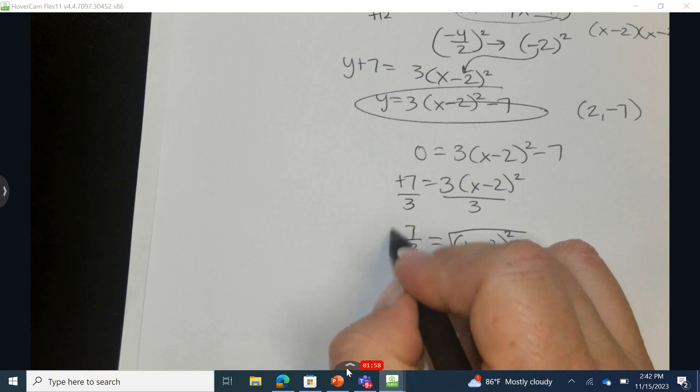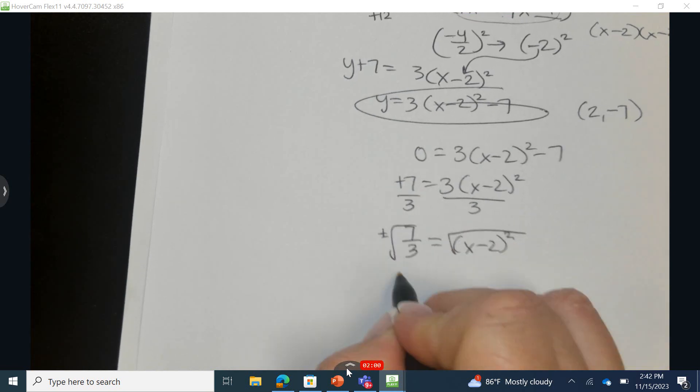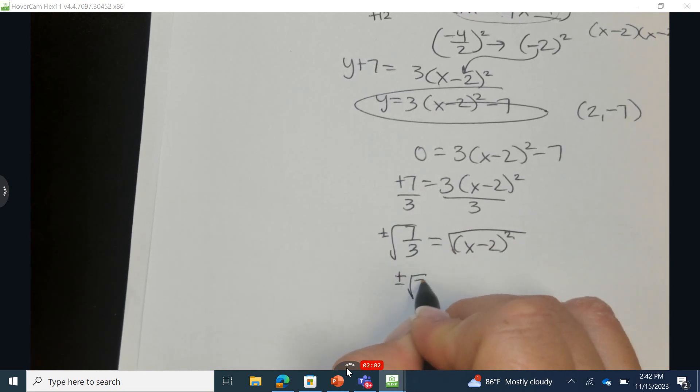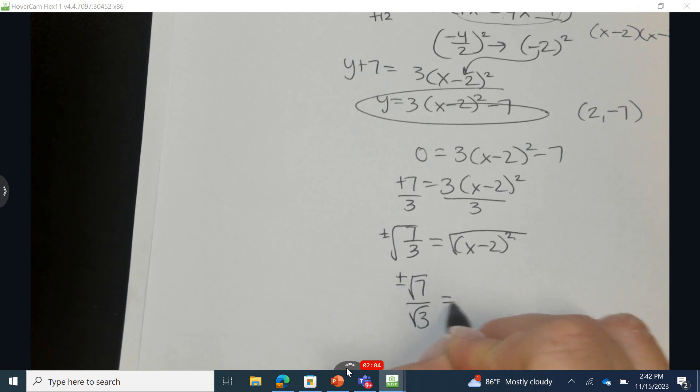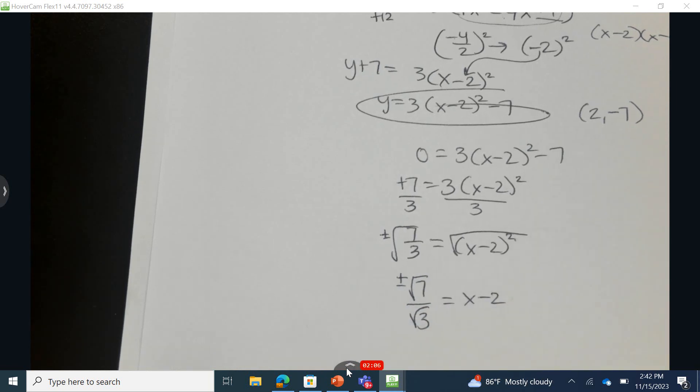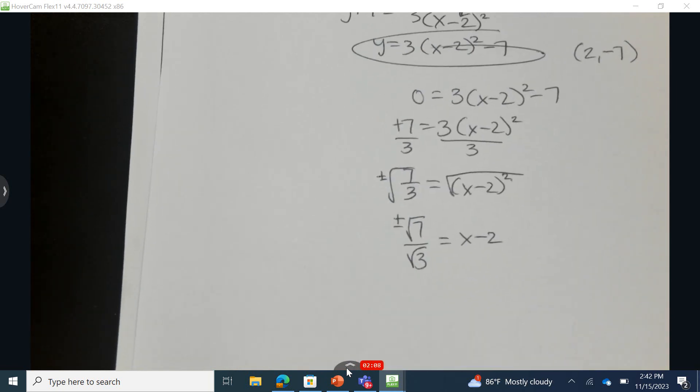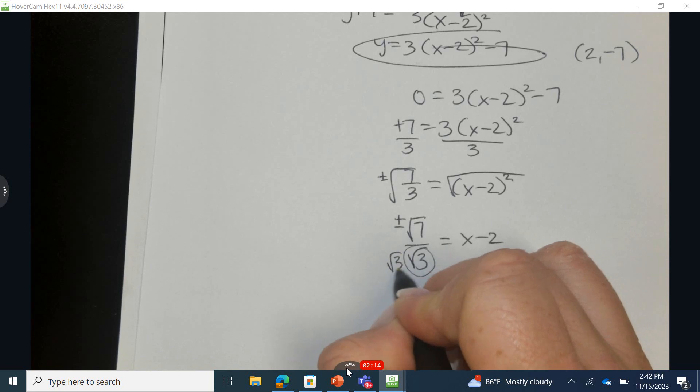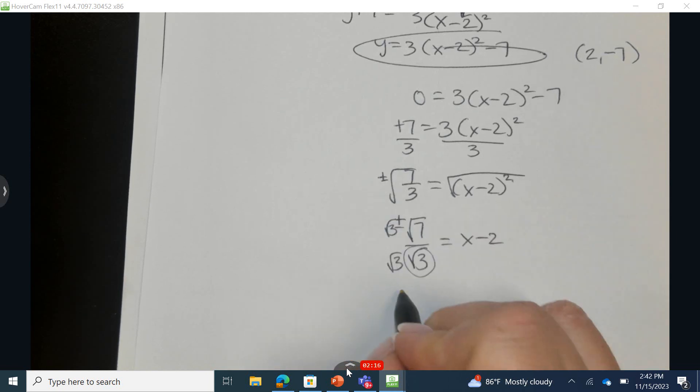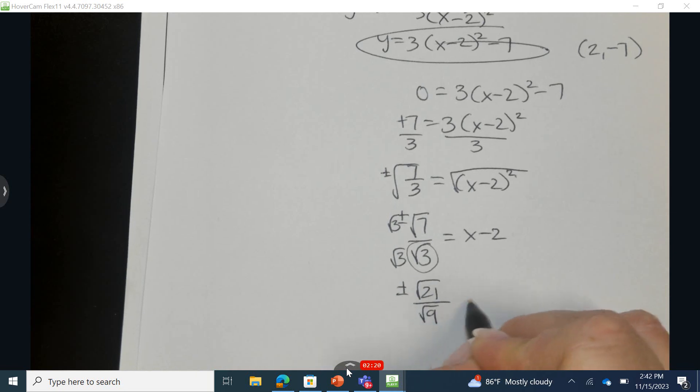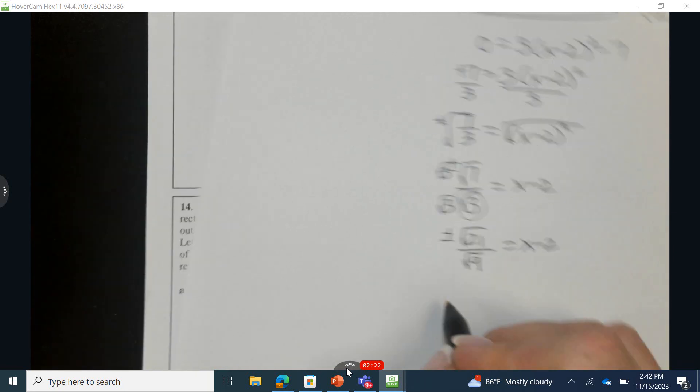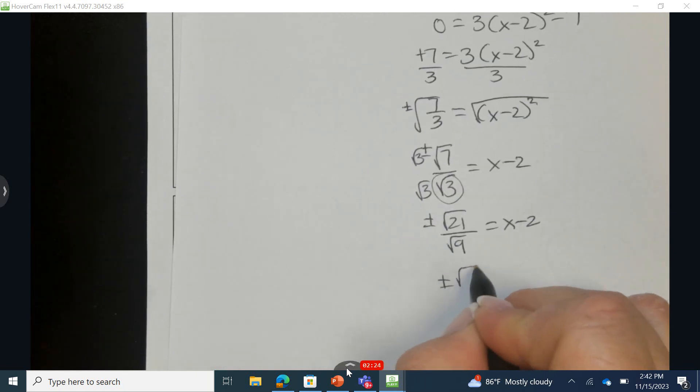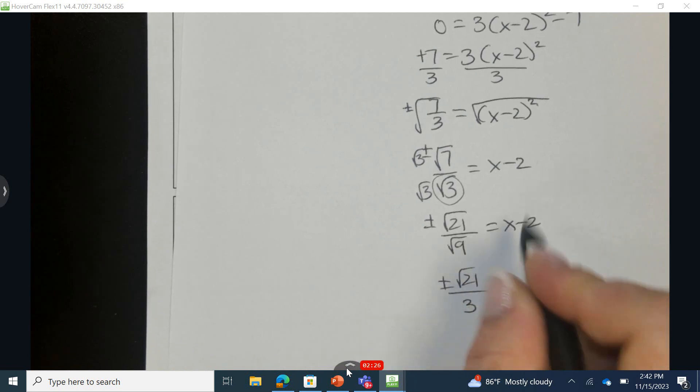Take the square root of both. I'm going to have two answers. So plus or minus the square root of 7 over the square root of 3 equals x minus 2. Now I need to rationalize the denominator. We can't have our answer have a square root on the bottom. So I take whatever this value is and take it times the top and times the bottom. So plus or minus the square root of 21 over the square root of 9 equals x minus 2. And I know the square root of 9 is 3.